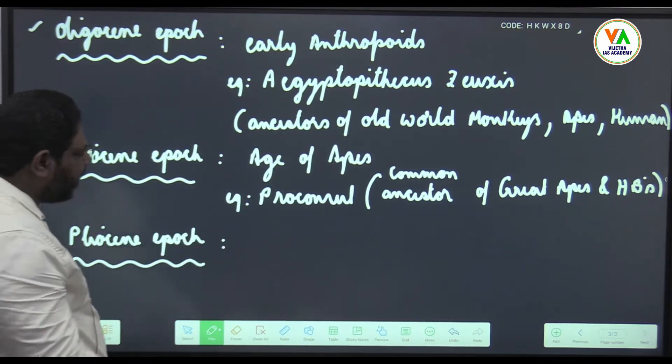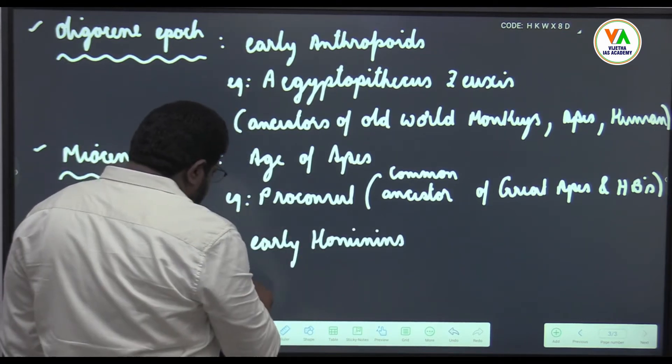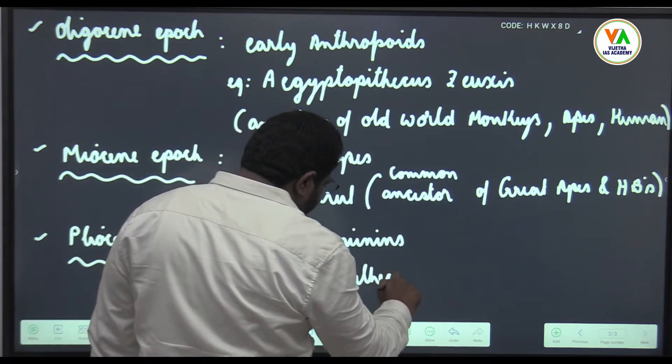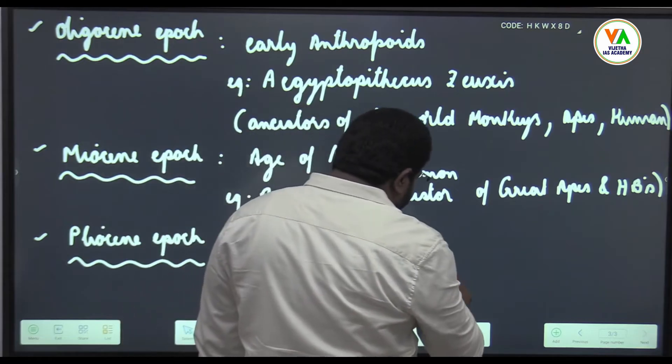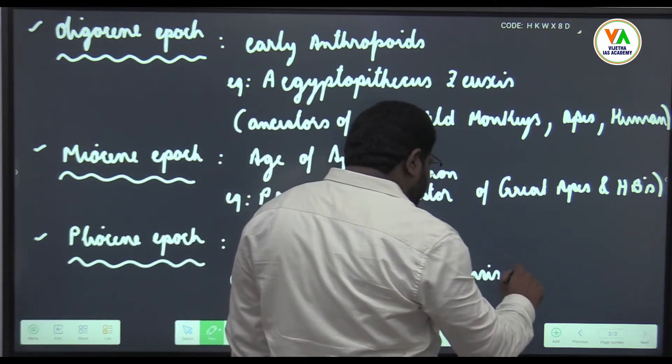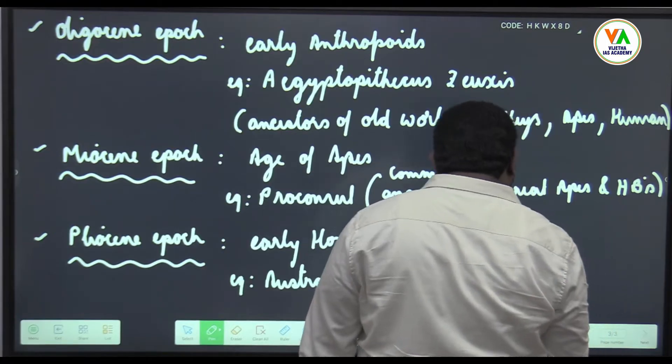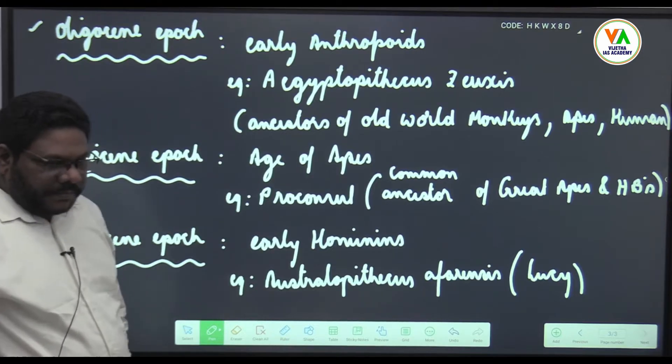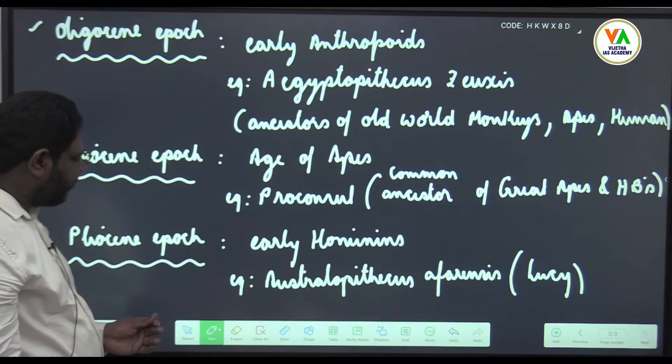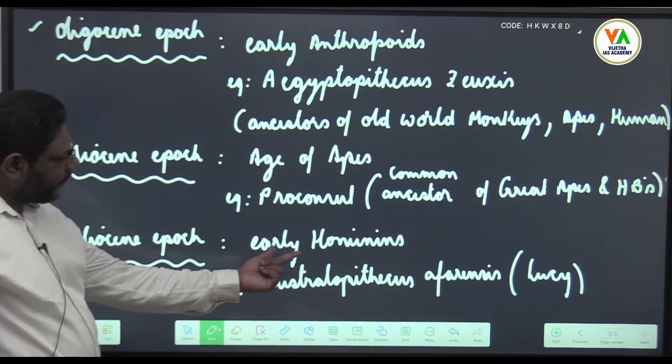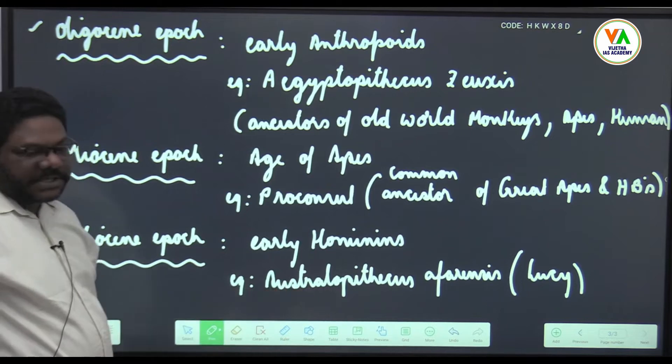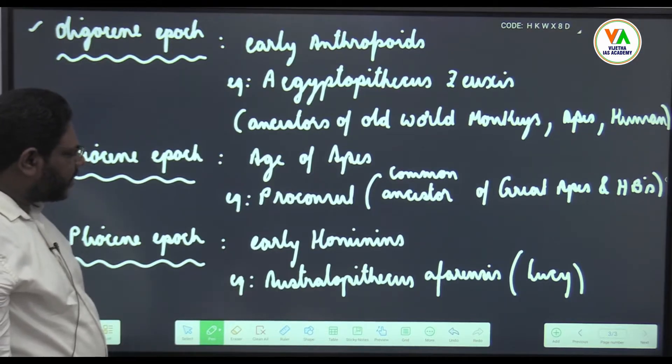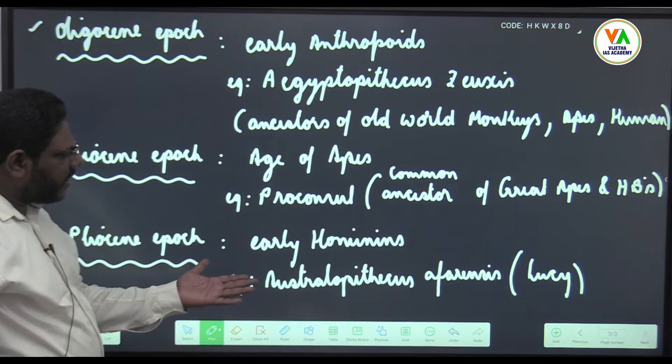Pliocene epoch, early hominins came into existence. Example is Australopithecus afarensis known as Lucy, the grandmother of human evolution or grandmother of human beings. Here is Pliocene, early hominins, which is Australopithecus, the first ancestor of human beings came into existence.